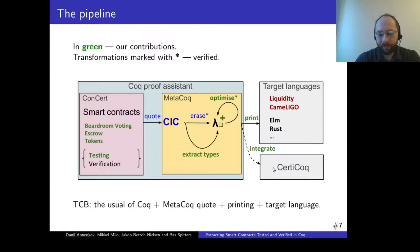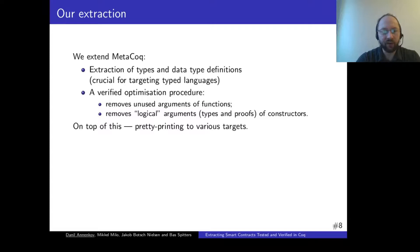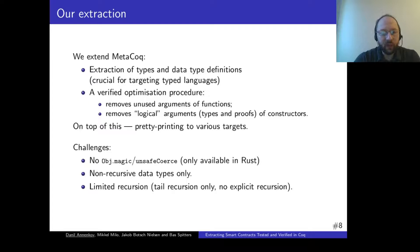We also integrate our development with the verified compiler CertiCoq. We extend extraction of metaprogramming with extraction of type and inductive type definitions, which is crucial since we would like to target typed functional languages. We also contribute with a verified optimization procedure that removes redundant or unused arguments of functions and some redundant arguments of constructors of inductive types. On top of this, in Coq itself, we implement a pretty-printing procedure to various target languages.